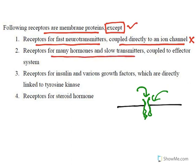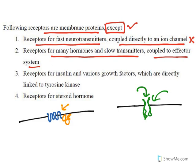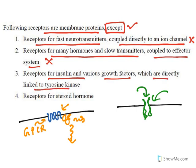The second option: receptors for many hormones and slow transmitters coupled to an effector system. These are G protein-coupled receptors (GPCRs) — they are coupled with a protein inside the cell, and activation of the receptor activates the effector system. GPCRs are also present at the membrane, so this option is also not the answer. The third option: receptors for insulin and various growth factors directly linked to tyrosine kinase — these are also at the membrane junction, so they are also membrane proteins.